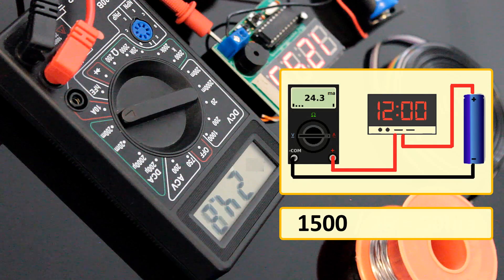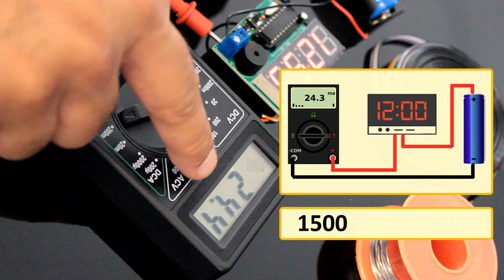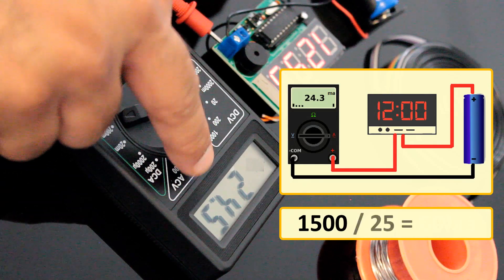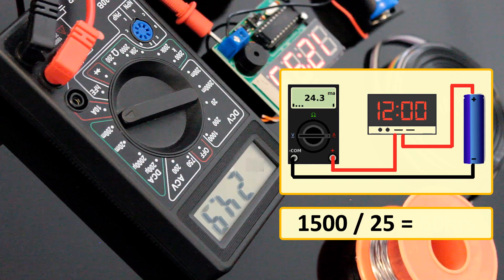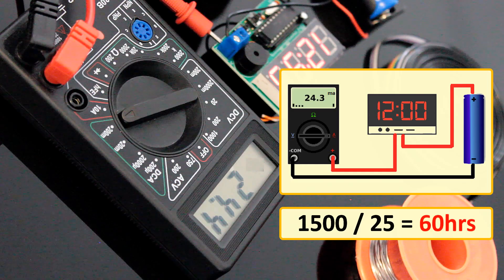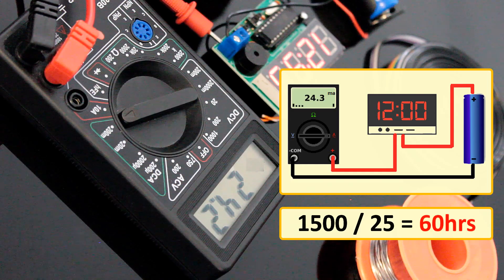The 18650 battery I have holds 1500 mA current. And by looking at the multimeter, it looks like the clock consumes almost 25 mA current. So, if we divide 1500 by 25, we get 60 hours, which is like 2.5 days.